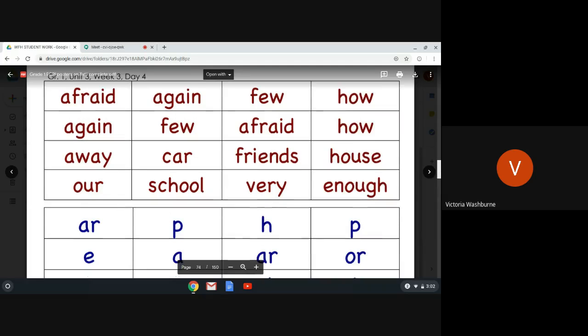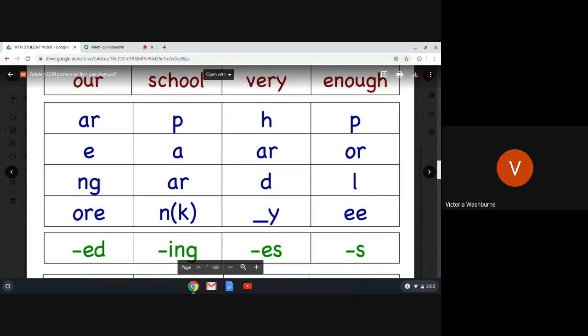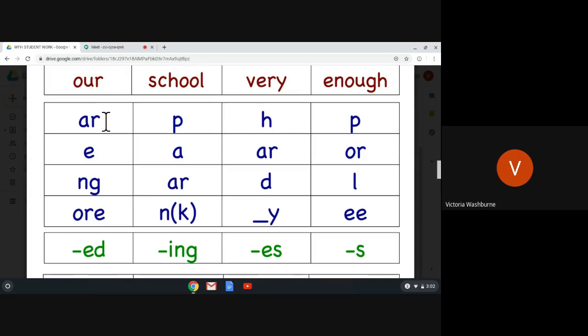We're going to move on to our sounds down here, which are in blue. We saw A-R in the word car. A-R always says R. So I'm going to say sound, you're going to tell me the sound, and then I'll tell you if you're correct. So we already said this one was R. Your turn. Nice job.